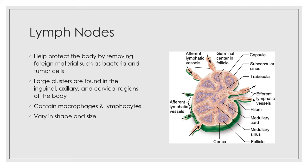The outer part of the node is the cortex. It contains collections of lymphocytes called follicles, many of which have dark-staining centers called germinal centers. The centers enlarge when specific B lymphocytes — B cells — are generating daughter cells called plasma cells, which release antibodies. The rest of the cortical cells are lymphocytes in transit — T cells that circulate continuously between the blood, the lymph nodes, and the lymphatic stream, performing their surveillance role. The medullary cords are inward extensions of the cortical tissue containing both B and T cells. Phagocytic macrophages are located in the central medulla of the lymph node.